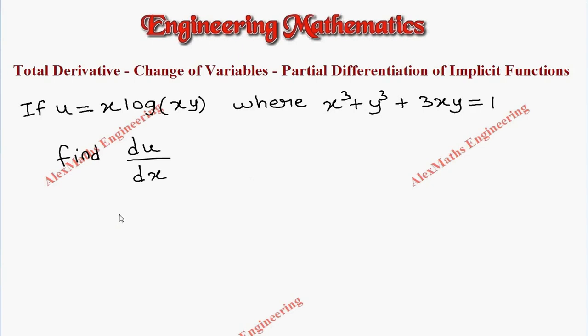Now the formula for the total derivative du by dx is partial u by partial x into dx by dx, which is 1, plus partial u by partial y into dy by dx.